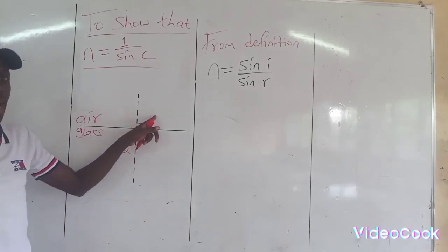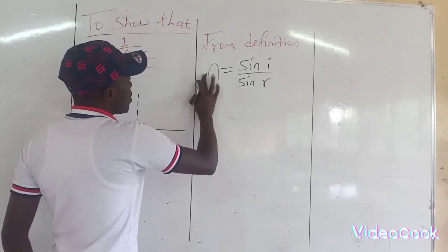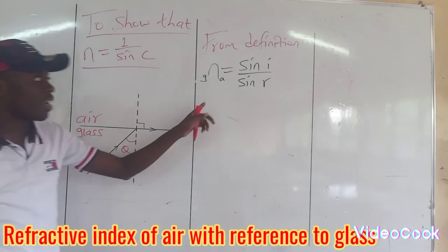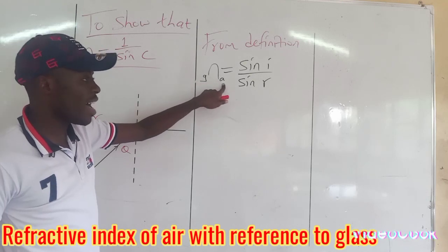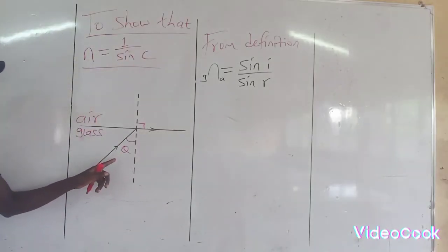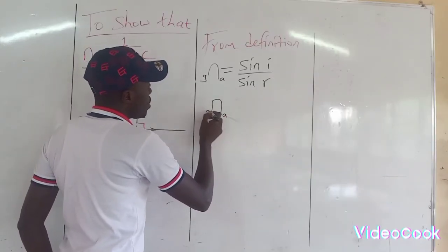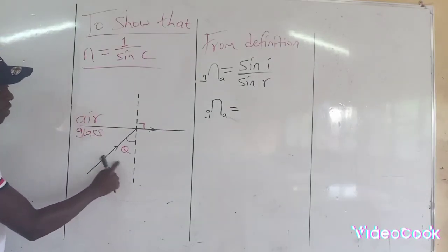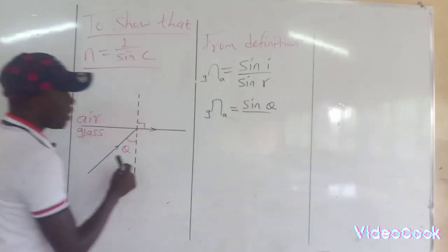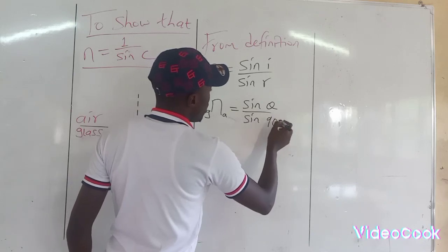But in this case, the ray is coming from glass to air. This can be read as the refractive index of air with reference to glass, which is given by the sine of angle of incidence — so the angle of incidence is in the glass — that means it will be sine theta divided by sine of the angle of refraction.